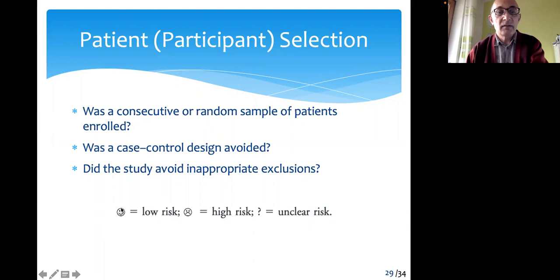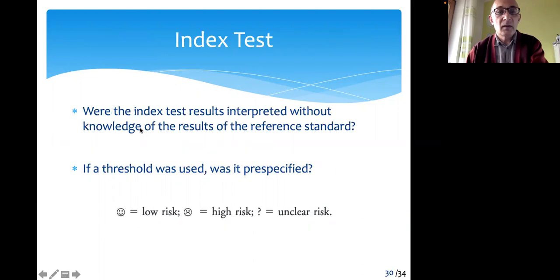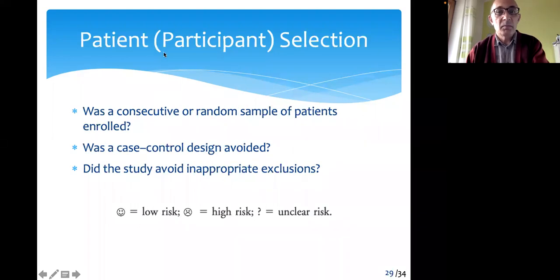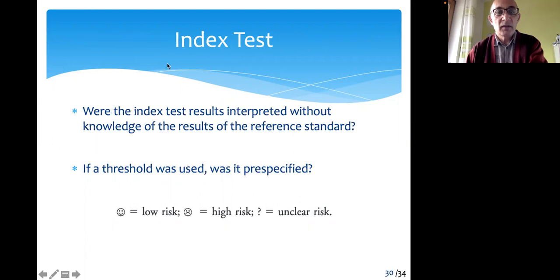The first domain is patient selection, where we have three questions — though these are modifiable; you can adapt them. Was the patient selection appropriate? Did this study avoid inappropriate exclusions? And so on.